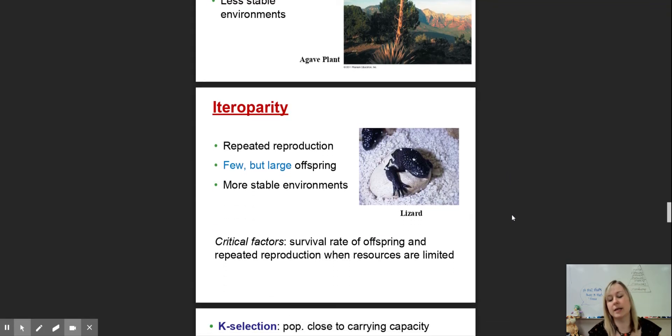Iteroparity is repeated reproduction. This is kind of what humans do. We have a much more stable environment. We have many reproductive events within our reproductive ages. We have very few offspring, but they are born large, ready to survive life. The environment is stable enough to allow them to be vulnerable in their first early ages and they still survive to adulthood.